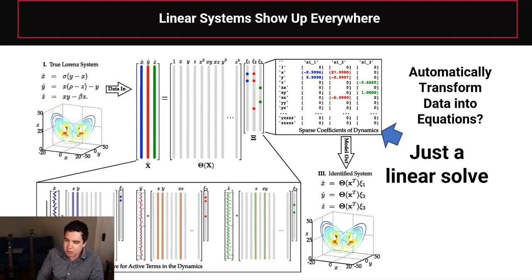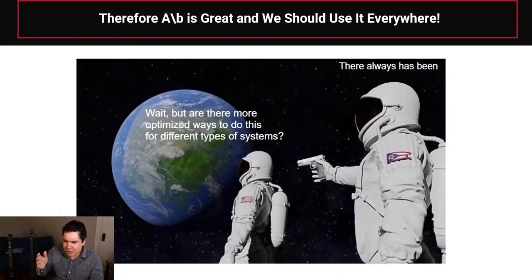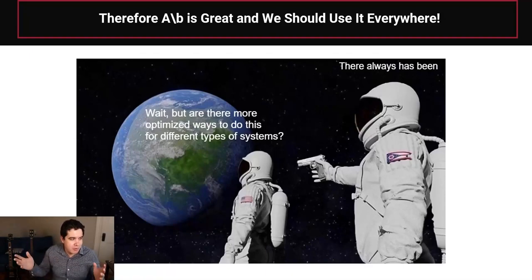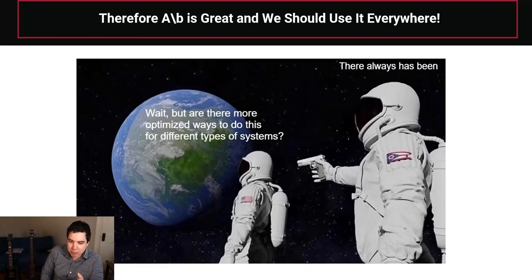So you just do A backslash B, and it solves the linear system. But wait, is there more than one algorithm for solving a linear system? And of course, there's a whole field called numerical linear algebra that has looked into this as one of its main problems. So yes, there have always been many algorithms for this, says Mr. Gunnyguy, but it's kind of just hidden from you with A backslash B. And that must tell you that maybe there's a better way to do this.